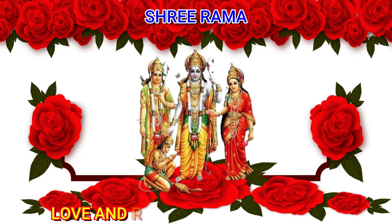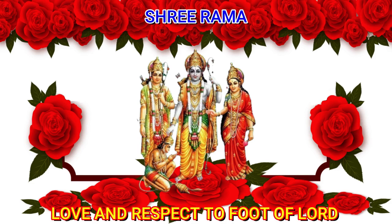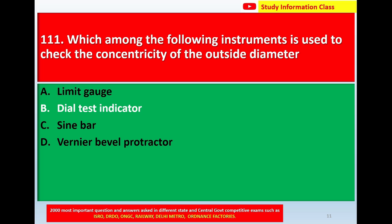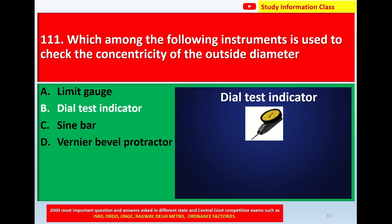Namaste, Shri Rama. Question number 111: which among the following instruments is used to check the concentricity of the outside diameter? Option A: limit gauge. Option B: dial test indicator. Option C: sine bar. Option D: one-ear bevel protector. The correct answer is Option B, dial test indicator. This is the diagram of the dial test indicator.